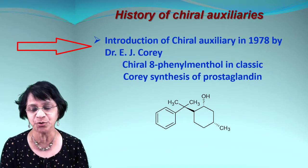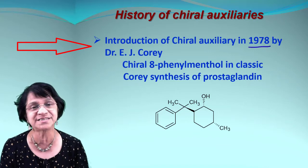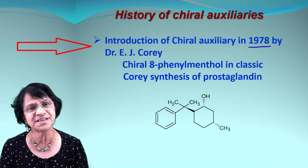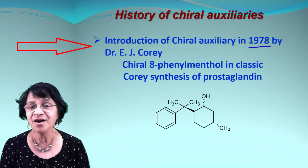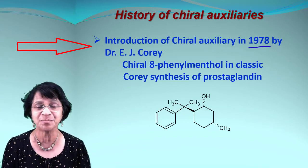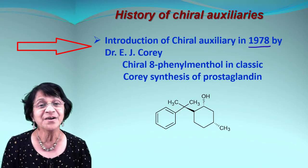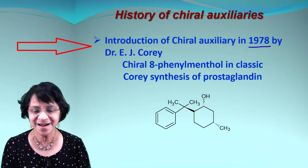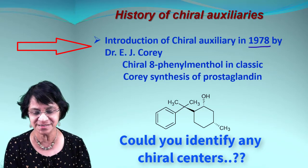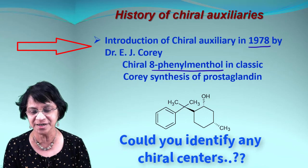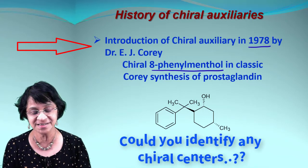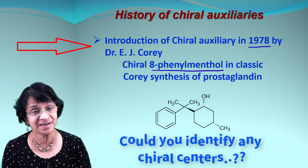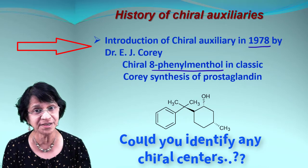Here is some history of chiral auxiliaries. The very first chiral auxiliary was introduced by Dr. EJ Corey back in 1978. There is also a classic Corey synthesis — he used it for the synthesis of prostaglandin. What he used was this compound: 8-phenyl menthol, and you can clearly see it's a chiral molecule with chiral centers.